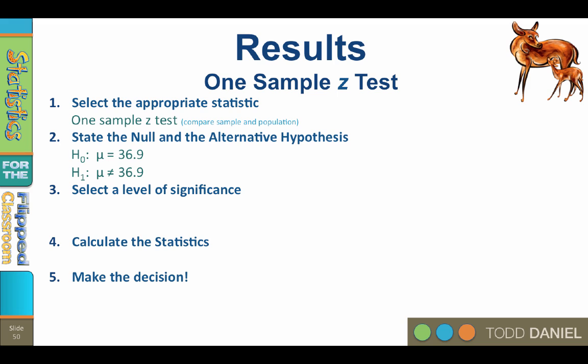H sub 1: mu does not equal 36.9. Step 3: Select a level of significance. We use a two-tailed test with an alpha of 0.05. The critical value for such a z-test is positive or negative 1.96.